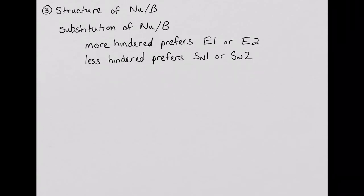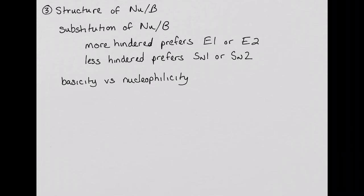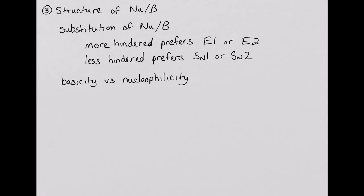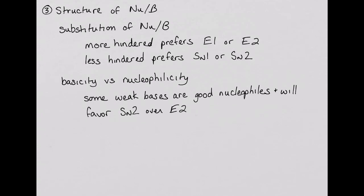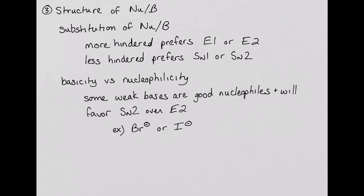The other factor to consider concerning the structure of the nucleophile or base is the property of basicity, and how it is not the same as nucleophilicity. While most strong bases are good nucleophiles and most strong nucleophiles are good bases, this isn't always the case. There are some weak bases that are still very good nucleophiles, and these compounds will much prefer substitution over elimination. An example of a strong nucleophile that is a weak base is bromide ion or iodide ion. Because of this, reactions that involve these particular nucleophiles will not have competing E2 reactions, because the SN2 reactions will be much faster.